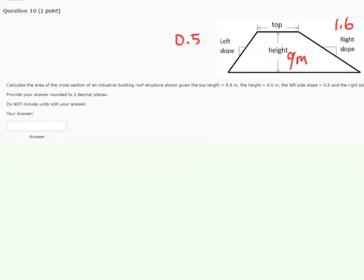In one of the questions in eLearn, we're asked to determine the cross-section area of a trapezoid, a trapezoidal shape, given that the top length is 8.8 meters, so the top of this trapezoid is 8.8 meters, the height is 9 meters, and the left side slope is 0.5 to 1, and the right side slope is 1.6 to 1.